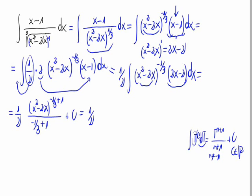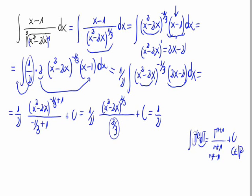This equals 1 half times: minus 1 third plus 1 is 2 thirds, so the numerator is x squared minus 2x raised to 2 thirds, plus the constant. The 2 thirds on the denominator means the 3 can go up to the numerator, giving us 3 times the cube root of x squared minus 2x squared, divided by 2, plus the constant.